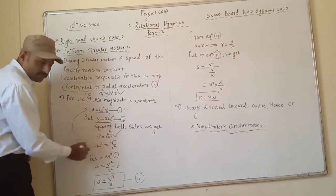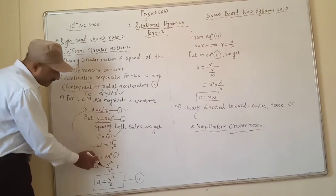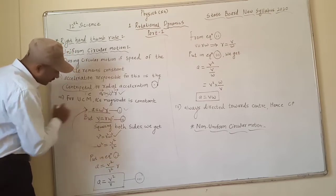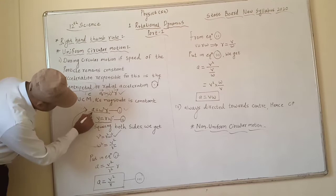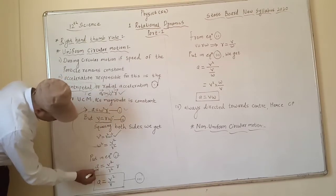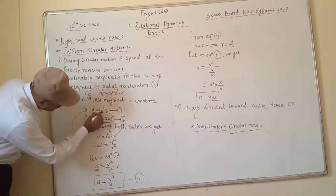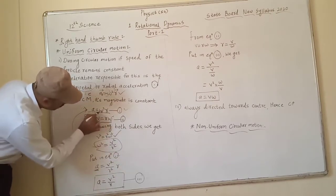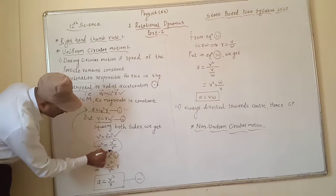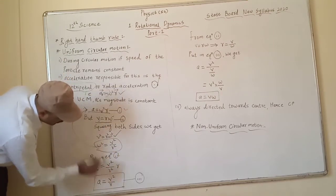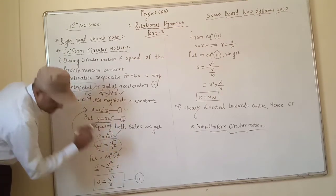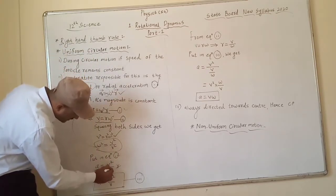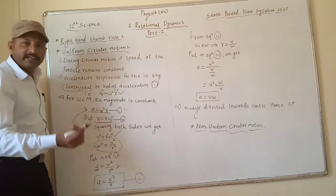Putting this into equation number one: A = ω²R. Substituting the value of ω², which is v²/R², into R, the R and R² partially cancel, leaving the remaining term. We get the acceleration A = v²/R.